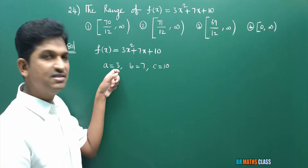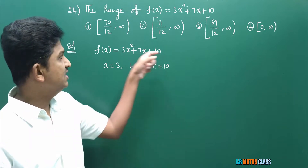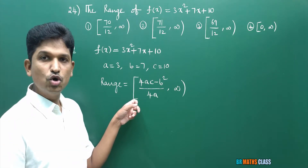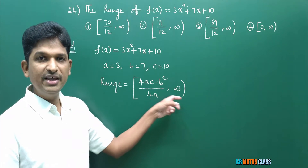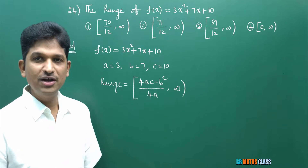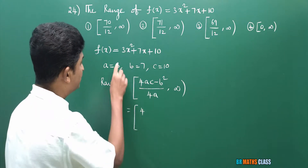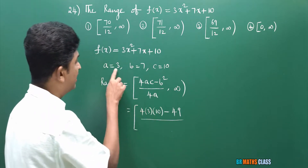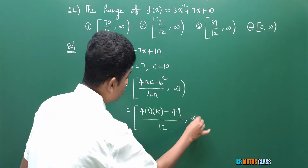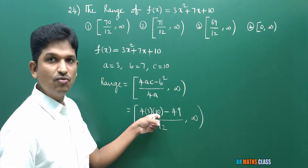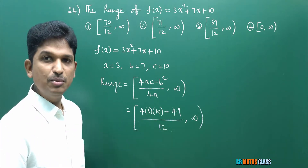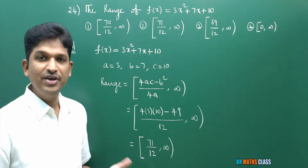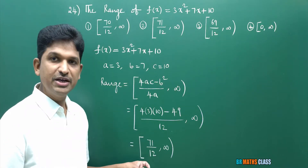A is 3, which is greater than 0. When A is greater than 0, the range formula is the closed interval [4AC minus B square divided by 4A, infinity). Now I will substitute: 4AC is 4 into 3 into 10, which is 120. Minus B square is minus 49. Divided by 4A, which is 4 into 3, that is 12. So 120 minus 49 is 71, giving 71 divided by 12 comma infinity. The range of this function is [71/12, infinity).